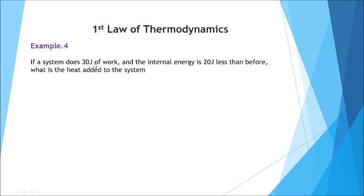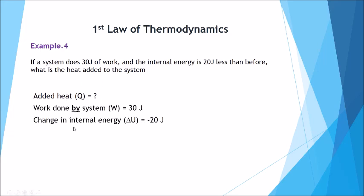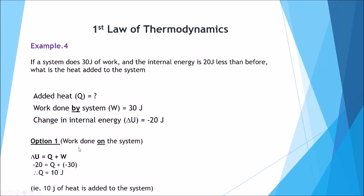A final example. If a system does 30 joules of work and the internal energy is 20 joules less than before, what is the heat added to the system? The work done by the system was 30 joules and the change in internal energy is minus 20 joules. From a chemistry perspective, delta U equals Q plus W: negative 20 equals Q plus negative 30, so Q must have been 10 joules of heat added to the system.